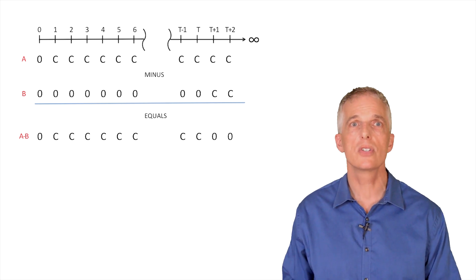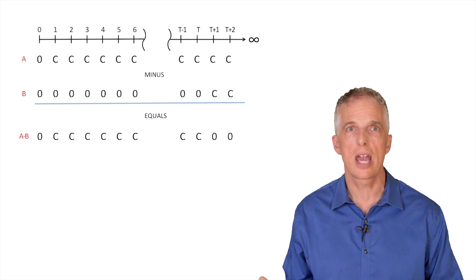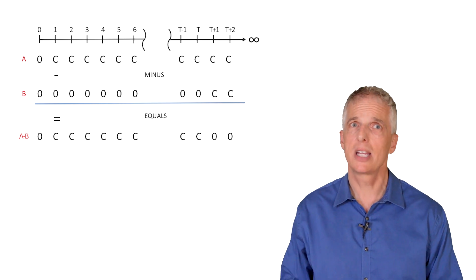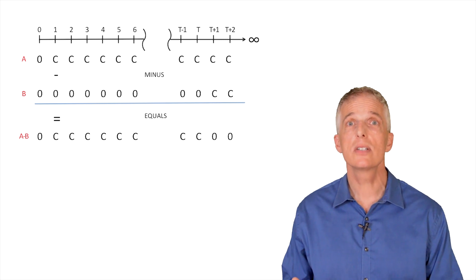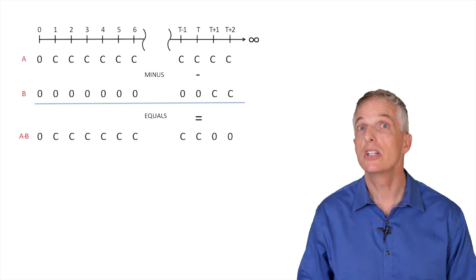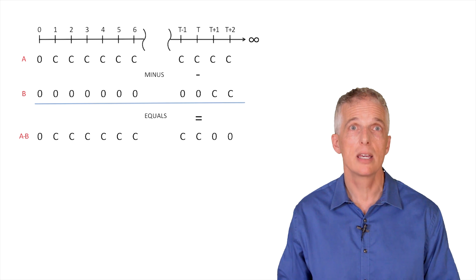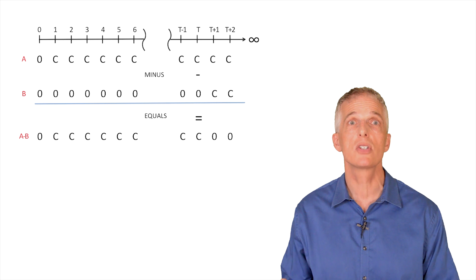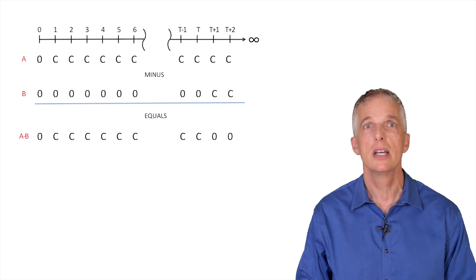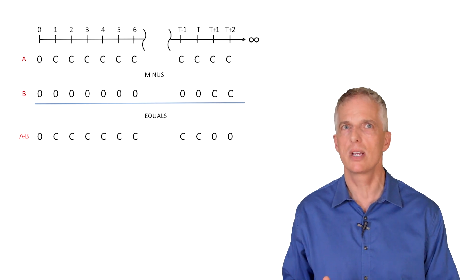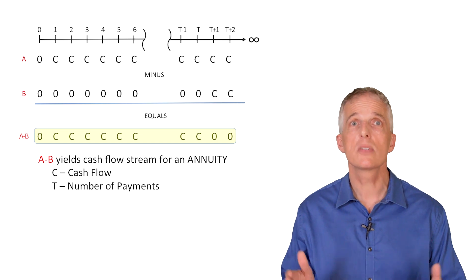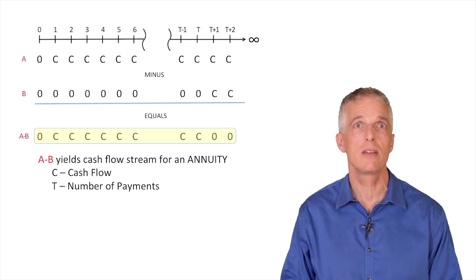Note what happens when we calculate the difference between A and B, or A minus B. The resulting cash flow stream is that of an annuity with the first cash flow received in year one and the last cash flow received in year T. In year zero, neither A nor B promises a cash flow, so the difference is zero. In year one, you begin receiving your promised cash flow C from A, but are not yet obligated to begin paying the cash flow C from B. Thus, the difference A minus B is merely C in year one. This calculation is the same from year two through year T. However, in year T plus one, things change. Though you continue to receive a payment from A, you are now also obligated to begin paying a cash flow C as promised on the second perpetuity B. Thus, the difference between the two perpetuities, A minus B, is zero beginning in year T plus one and in every remaining year.